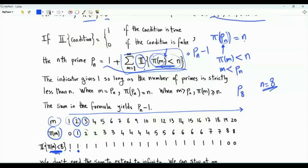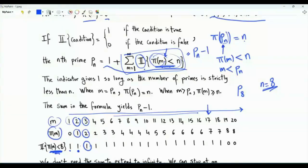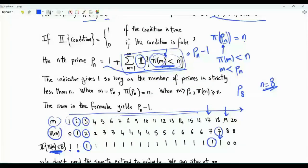Then m equals 3: π(m) is equal to 2, and 2 is strictly less than 8, so the indicator equals 1. This will continue. Here we have reached the seventh prime, which is 17. π(17) is equal to 7, and 7 is strictly less than 8, so the indicator is still equal to 1. 18 is not a prime number — π(18) equals π(17) equals 7, so the indicator is still equal to 1. Now m equals 19, and that's the eighth prime number. π(19) equals 8, and 8 strictly less than 8 is false — the indicator is 0, and it will remain 0 for eternity.